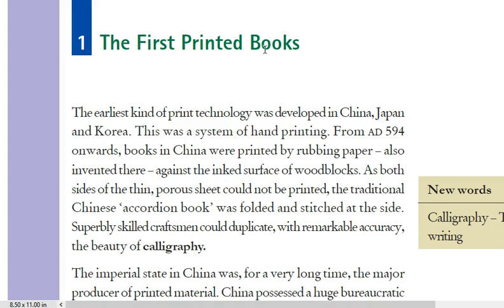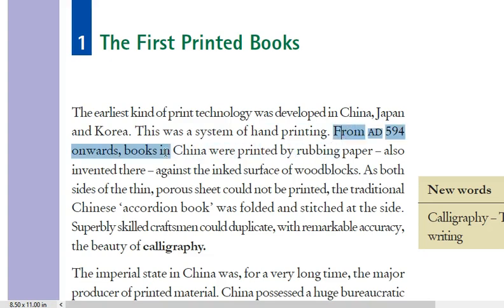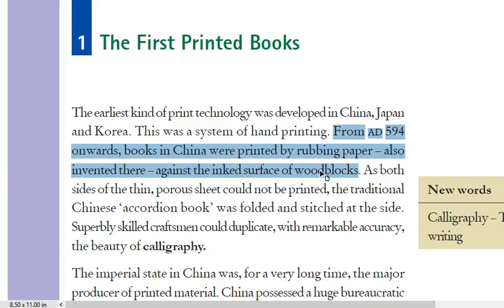Now we are going to see the first printed books. The earliest print technology was developed in China, Japan and Korea — this was a system of hand printing. From AD 594 onwards, books in China were printed by rubbing paper — also invented there — against the ink surface of wood blocks.